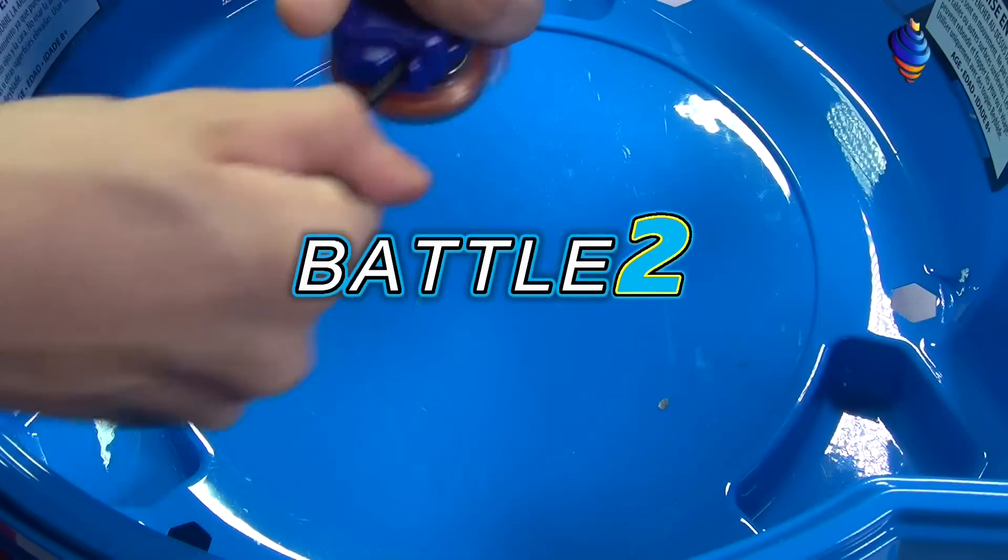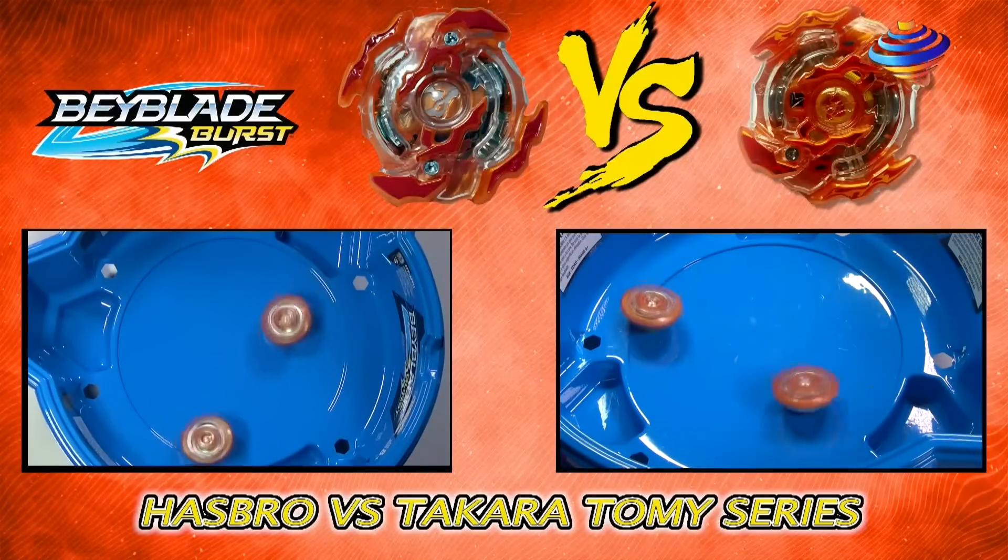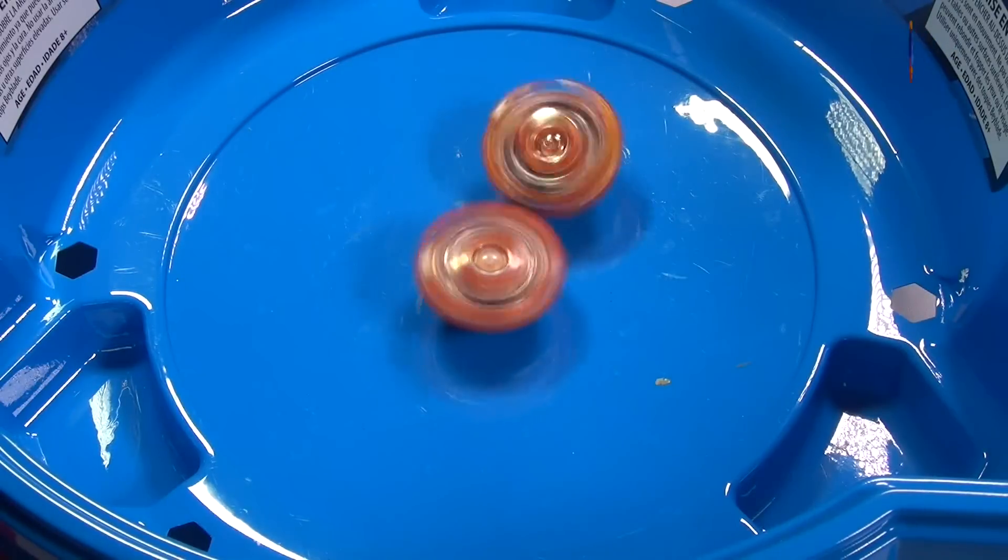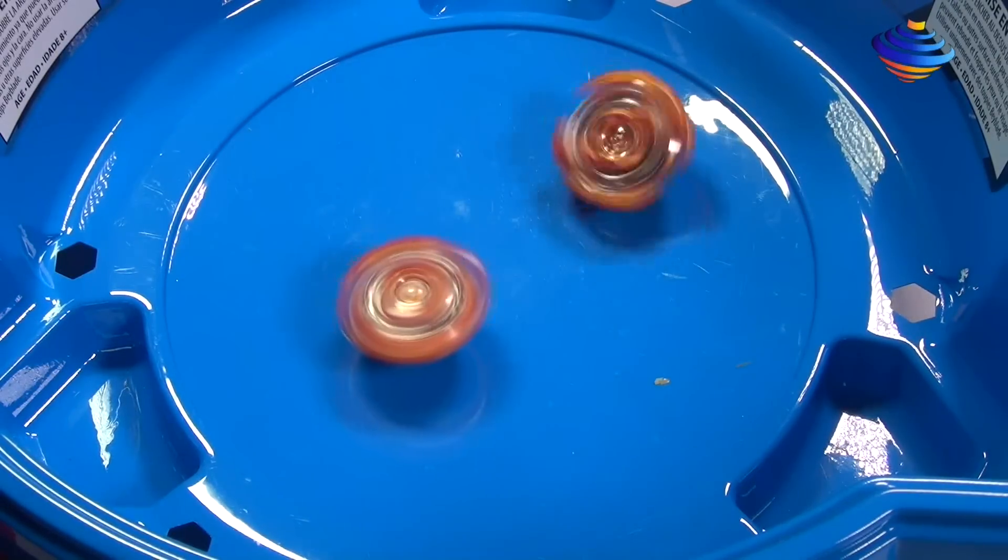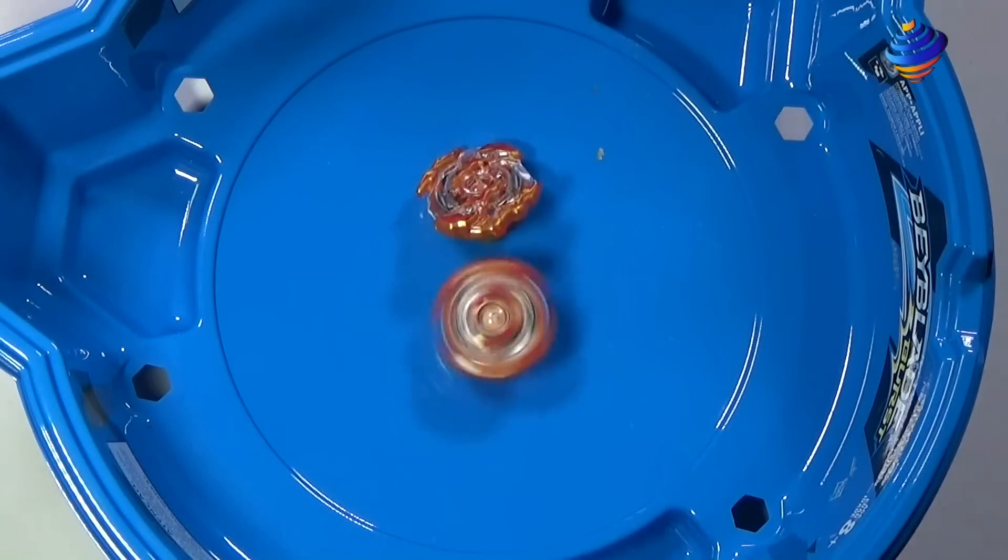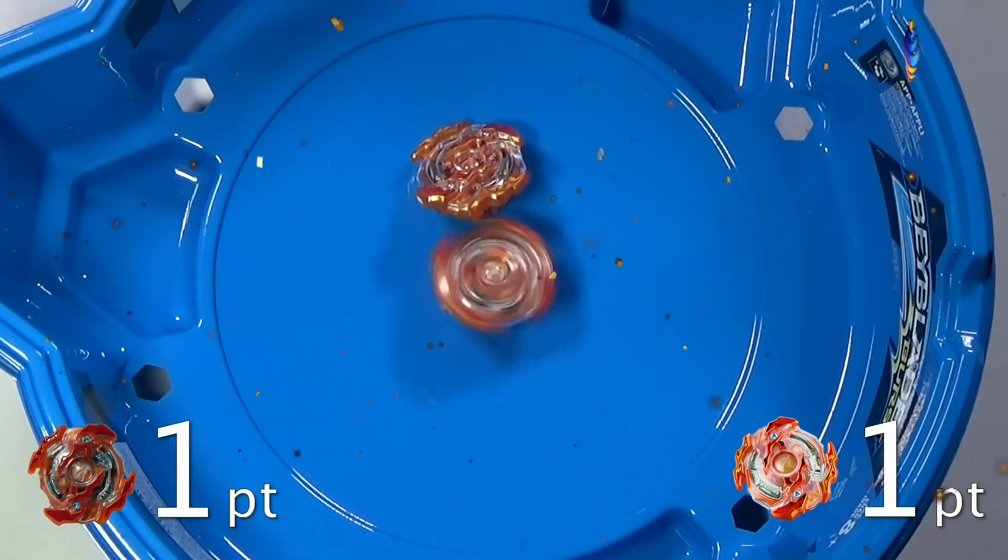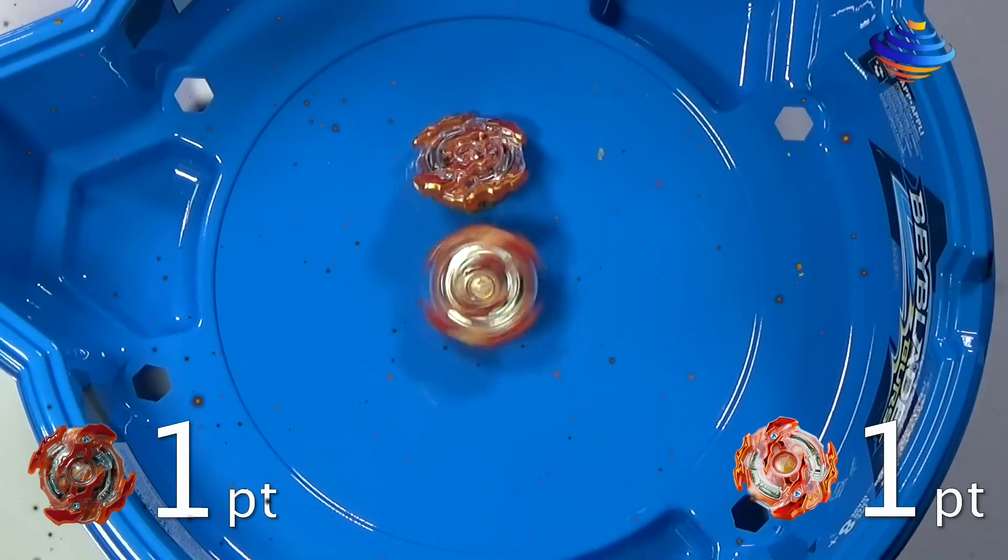Battle 2, 3-2-1, let it rip. So let's see what went for battle 2. Will it be Rising Ragnarok or Rock Tavor R2? Rock Tavor R2 is giving a lot of attacks to Rising Ragnarok. And it looks like those attacks really did succeed. Our winner is Rock Tavor R2 with a score of 1-1.